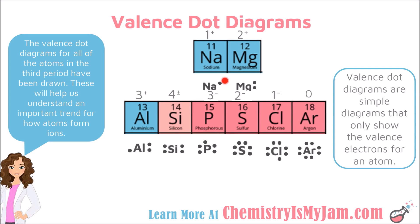So how does this relate to ion charges? Sodium has 1 valence electron — it is going to give that away, leaving a sodium ion with a charge of plus 1. Magnesium has 2 valence electrons; it gives away both, leaving a charge of plus 2. Aluminum has 3 valence electrons; it gives away all 3, leaving a charge of plus 3. Silicon has 4 valence electrons — it can either give away or take 4, leaving it with a charge of plus or minus 4.